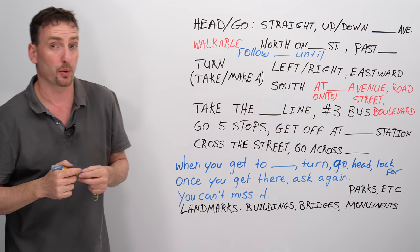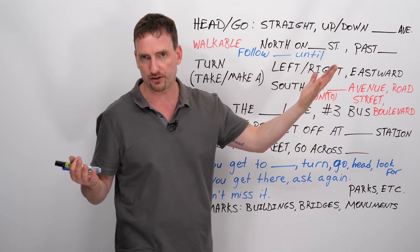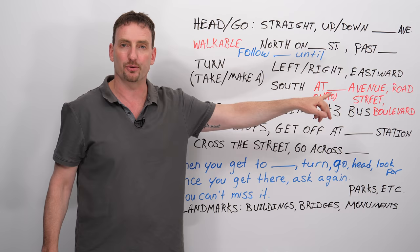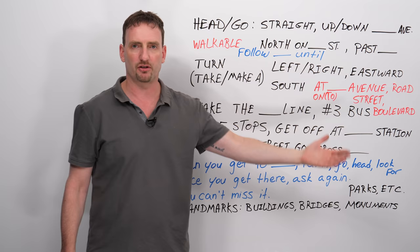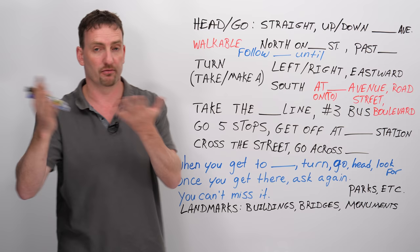Then there's turn. You can turn left, turn right, turn eastward, means in the direction of east. Turn south, you can say south or southward, east or eastward, both okay. Now you can also say take a right, make a left. These are only for left and right, that's why I put them in brackets. You can't say take south, take eastward, that doesn't work. Take a right basically means turn right. Make a left basically means turn left. This is especially for driving. So if you're driving and somebody is sitting next to you and giving you instructions, they'll say, take a left over there, make a right at the next street, or turn.